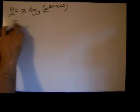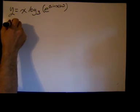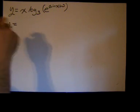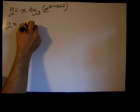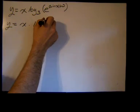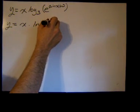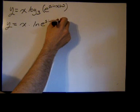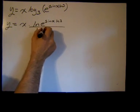We're going to use the change of base formula in order to simplify this first, and some properties of logarithms. So we have x times the natural log of the argument, e to the sine x natural log of 3, over the natural log of the base.